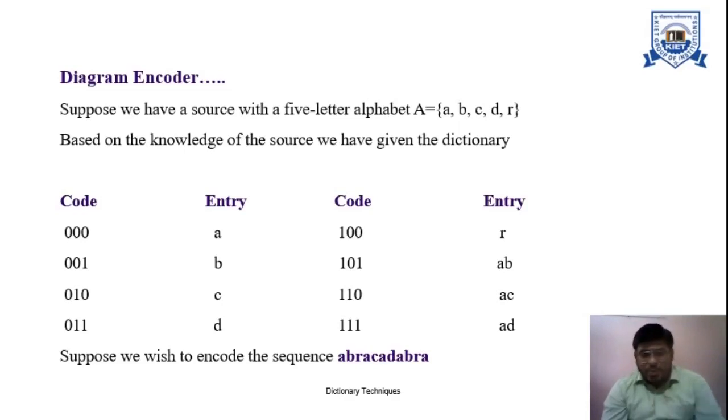We find that combination of characters in the entry of the given dictionary. Whatever code has been given respective to that particular combination, we will replace that code. This is the combination we select and this is the code we find out.